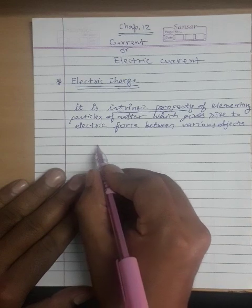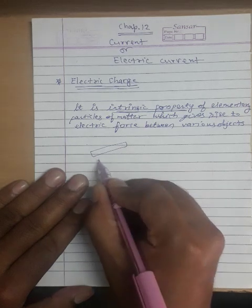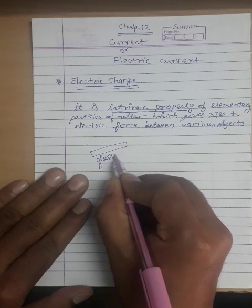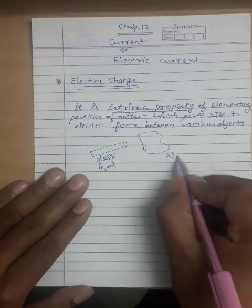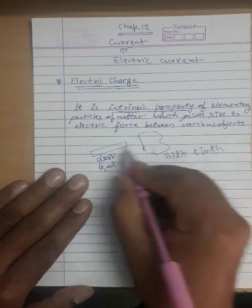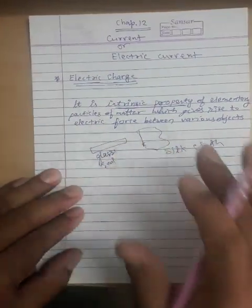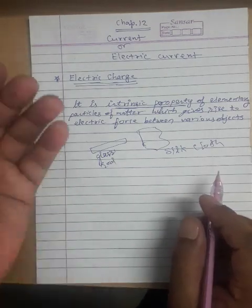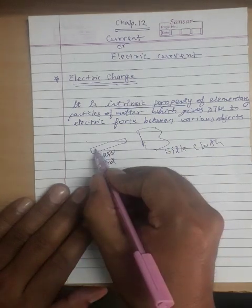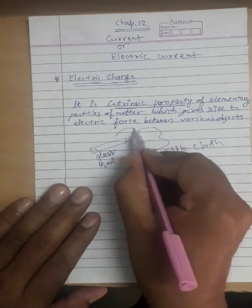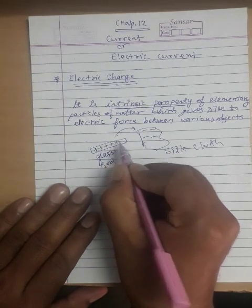Suppose we have an object — a glass rod and a silk cloth. If we rub them together, the particles will transfer. It will depend on the nucleus structure. If there is a loosely bonded electron, it will transfer to the other side. If an electron transfers, that side will be negatively charged, and the other side will be positively charged — due to rubbing.